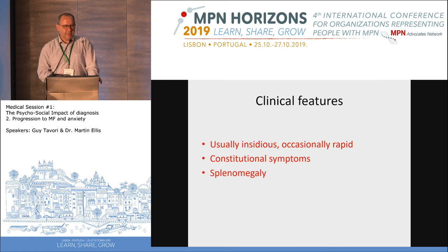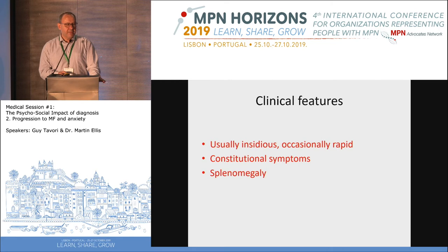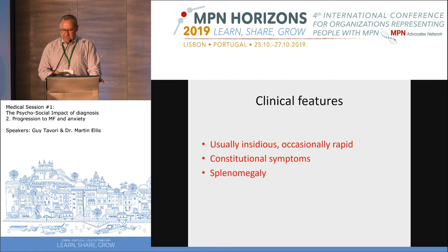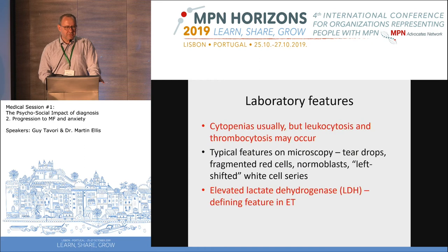The clinical features usually develop insidiously — over months or maybe even a year or more. However, it can sometimes occur very rapidly, with a patient declining quickly, and the initial impression may be transformation to acute leukemia, but bone marrow biopsy may reveal fibrosis instead. Symptoms include constitutional symptoms: weight loss, sweating, fevers, general fatigue, and not feeling well. Splenomegaly — an enlarged spleen — is also one of the key clinical features.